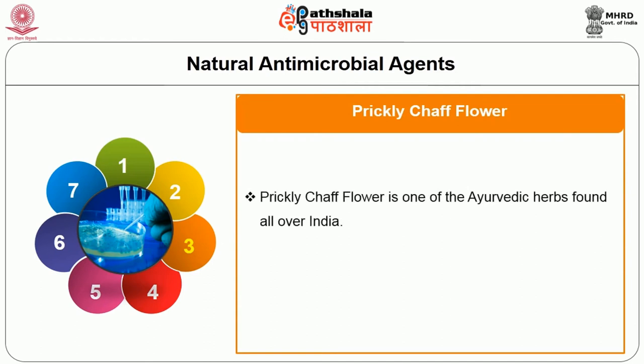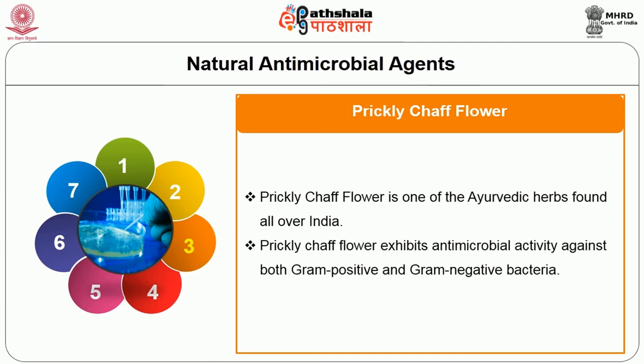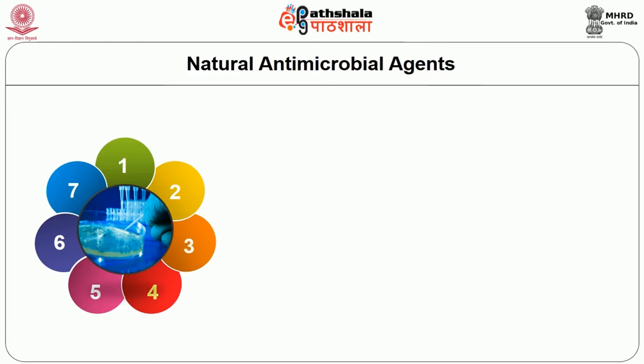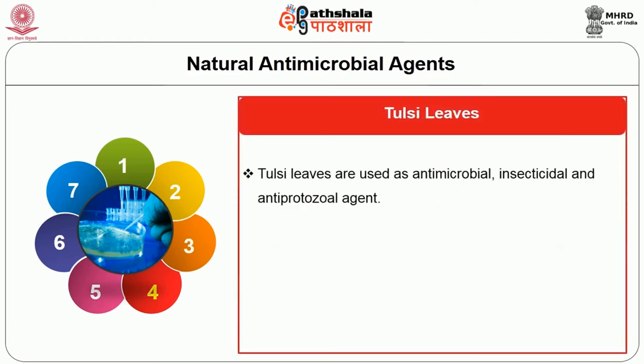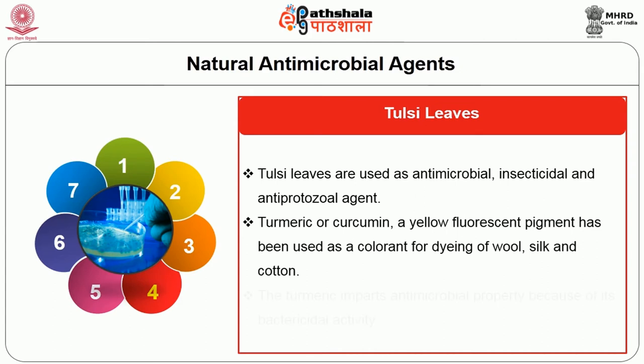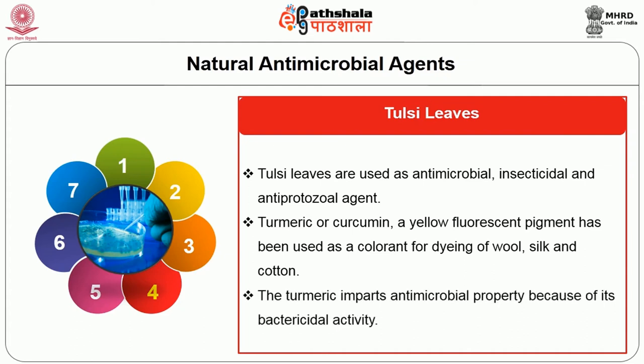Prickly chaff flower is one of the ayurvedic herbs found all over India. It exhibits antimicrobial activity against both gram-positive and gram-negative bacteria. Tulsi leaves are used as antimicrobial, insecticidal and anti-protozoal agents. Turmeric or curcumin, a yellow fluorescent pigment, has been used as a colorant for dyeing of wool, silk and cotton. Turmeric imparts antimicrobial property because of its bactericidal activity.